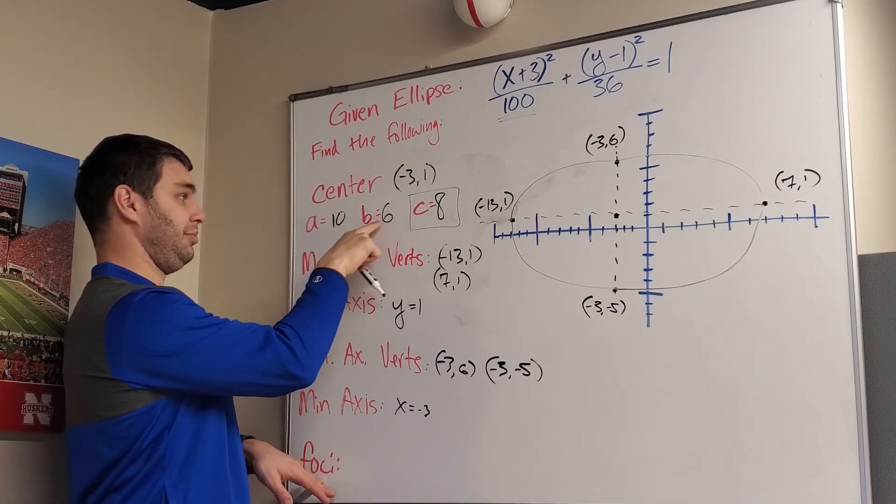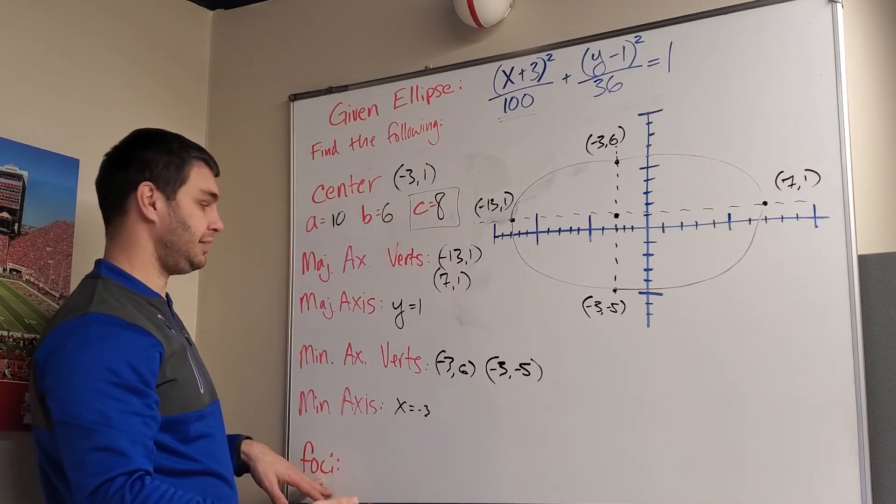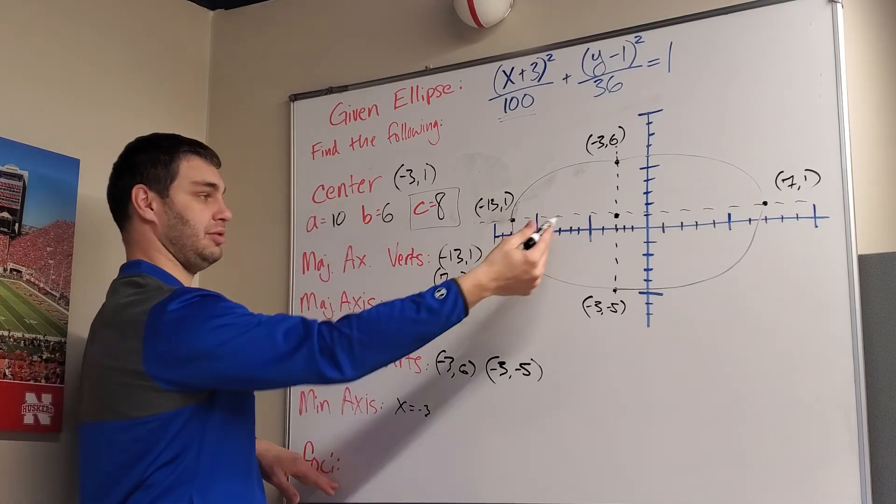Because I think we said 100 minus 36 was 64. Square root of that was 8.